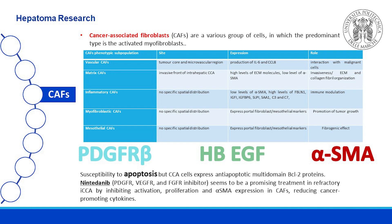High expression of alpha-SMA is correlated with larger tumor size, lymph node metastasis, higher histological grade, and a worse 5-year survival rate. Nintedanib, a PDGFR, VEGFR, and FGFR inhibitor, seems to be a promising treatment in refractory intrahepatic cholangiocarcinoma by inhibiting activation, proliferation, and alpha-SMA expression in CAFs, reducing cancer-promoting cytokines.